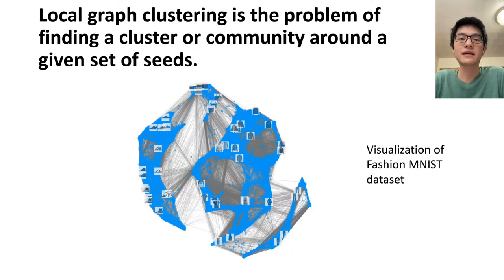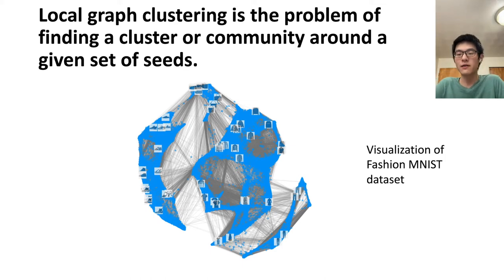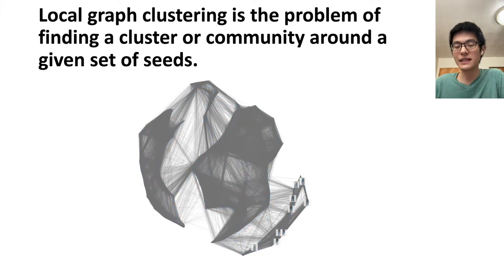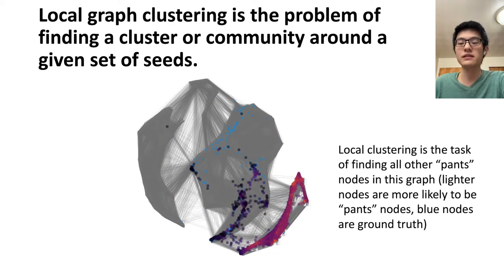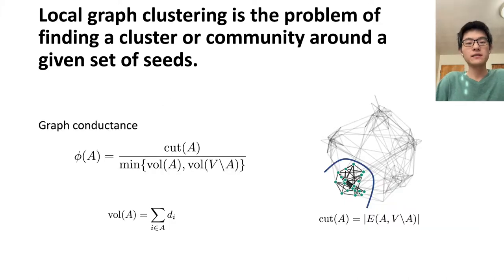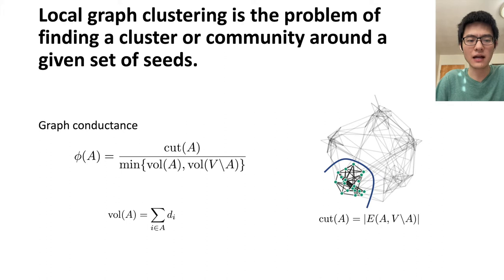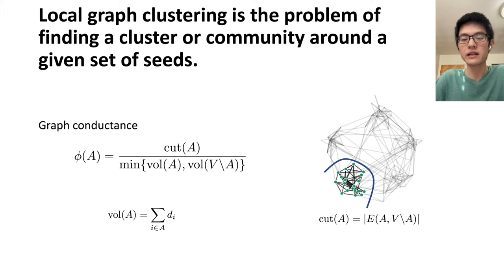Before we dive into what is local hypergraph clustering, maybe we can first define what is local graph clustering, because that is a problem that has been more extensively studied. To give an example, here is a graph of a fashion ministry site. Each node is an image of clothes — it can be pants, t-shirts, or shoes — and we use some pants nodes as the seed nodes. Then the task of local clustering is to find all the other nodes in this graph. One common metric to define the quality of your cluster is called graph conductance. It is defined as the ratio of the cut divided by the size of your cluster. The cut of your cluster is the number of edges connecting nodes inside your cluster to nodes outside of it, and the size of your cluster is the sum of the degrees of the nodes inside your cluster.